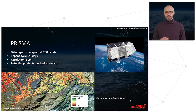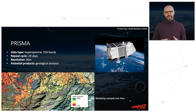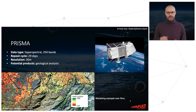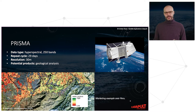The other hyperspectral mission mentioned is called PRISMA. Again with a large number of bands — 250 bands — a repeat cycle of 29 days, and a resolution similar to Hyperion at 30 meters. Potential products range from geological analysis to vegetation, and everything that can be done with hyperspectral data, including pollution monitoring.